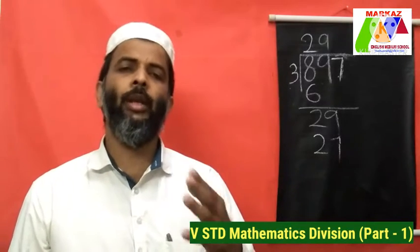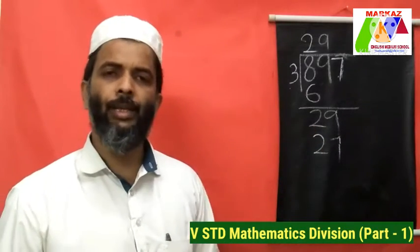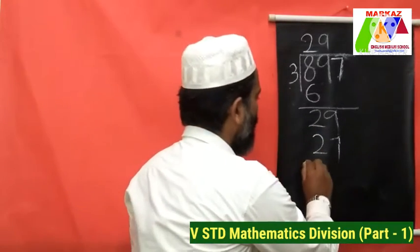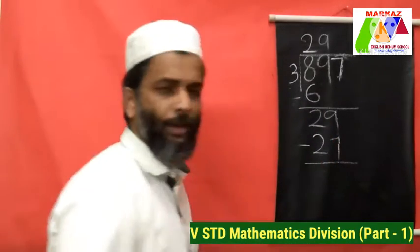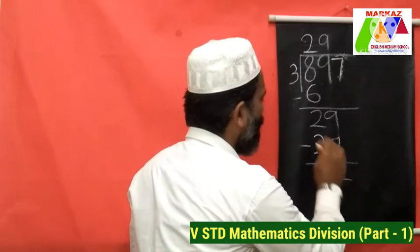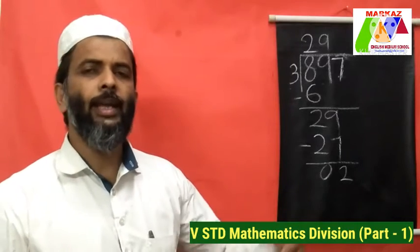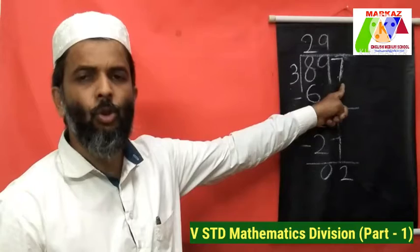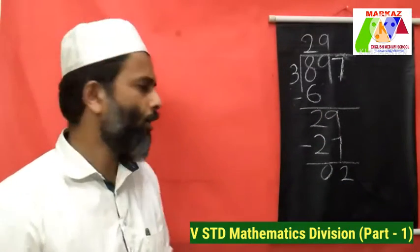We have to subtract these two numbers. 29 minus 27: 9 minus 7 is equal to 2, and 2 minus 2 is 0. Now the next step is to bring down the next digit, which is 7. Bringing down 7 gives us the new dividend of 27.